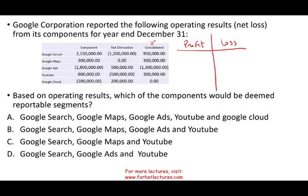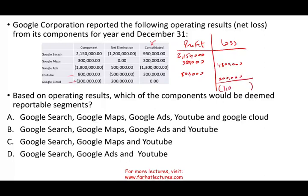So for Google Search, we have 2,150,000. Google Maps has 300,000. Google Ads has a loss of 1.8 million — that goes in the loss column. YouTube has a profit of 800,000. Google Cloud has a loss of 200,000. Let's start with losses: all losses equal 2 million. Now let's add up all the gains: 2,150,000 plus 300,000 plus 800,000 equals 3,250,000. So we have total profits of 3,250,000 and total losses of 2,000,000.